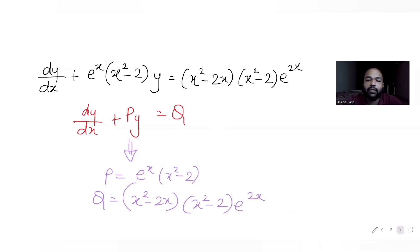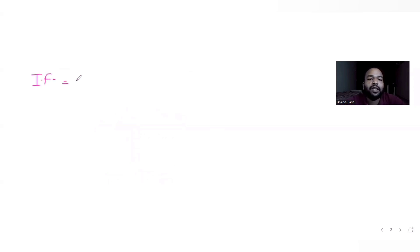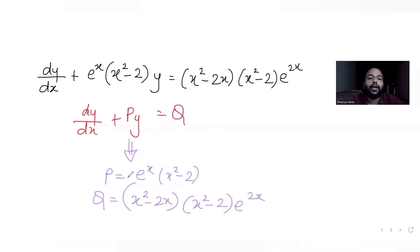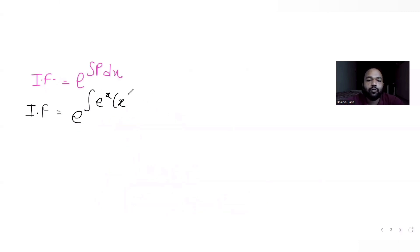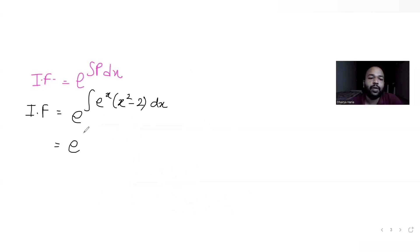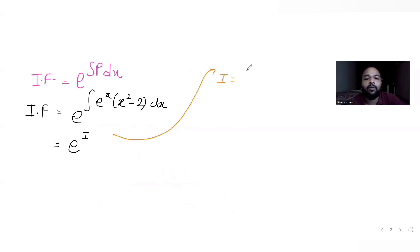For this general form of differential equation, the integrating factor (IF) is e^(∫P dx), which is e^(∫e^x·(x²-2) dx). Let's call this integral I, so IF = e^I. We need to solve I = ∫e^x·(x²-2) dx.